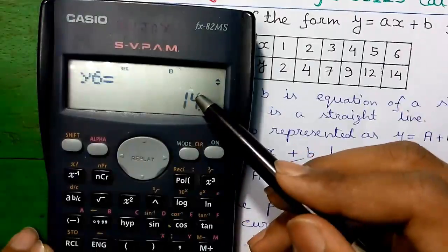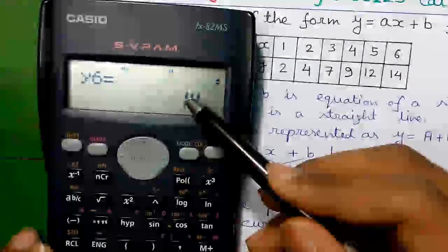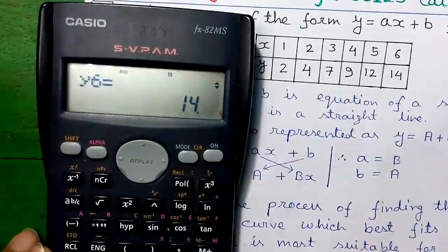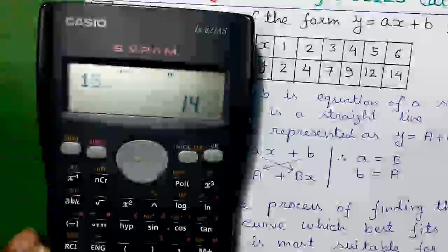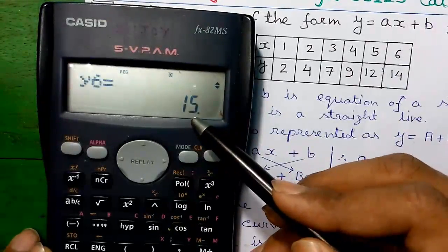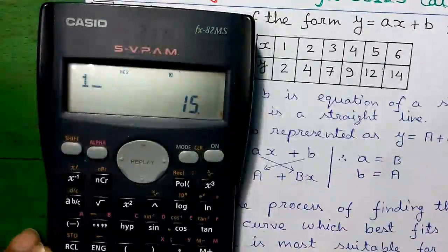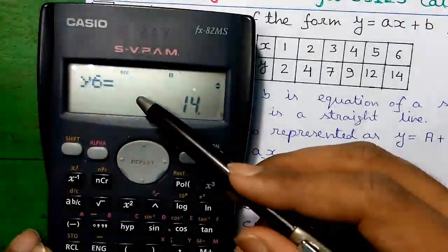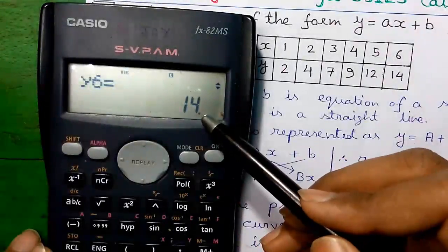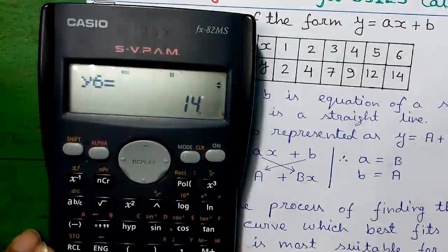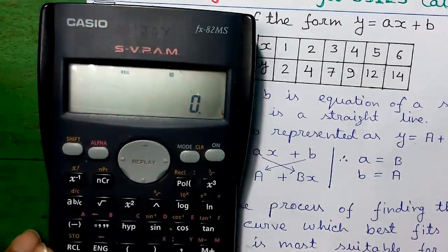If you want to change any value — let's say you want to change Y6 to 15 — enter the new value and press the equals button. So Y6 changes to 15. To change it back, enter 14 and press the equals button. So Y6 changes back to 14. Now clear the screen by pressing the AC button.